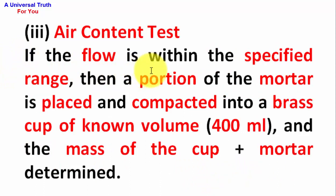If the flow is within the specified range, then a portion of the mortar is placed and compacted into a brass cup of known volume, 400 mL, and the mass of the cup plus mortar determined.